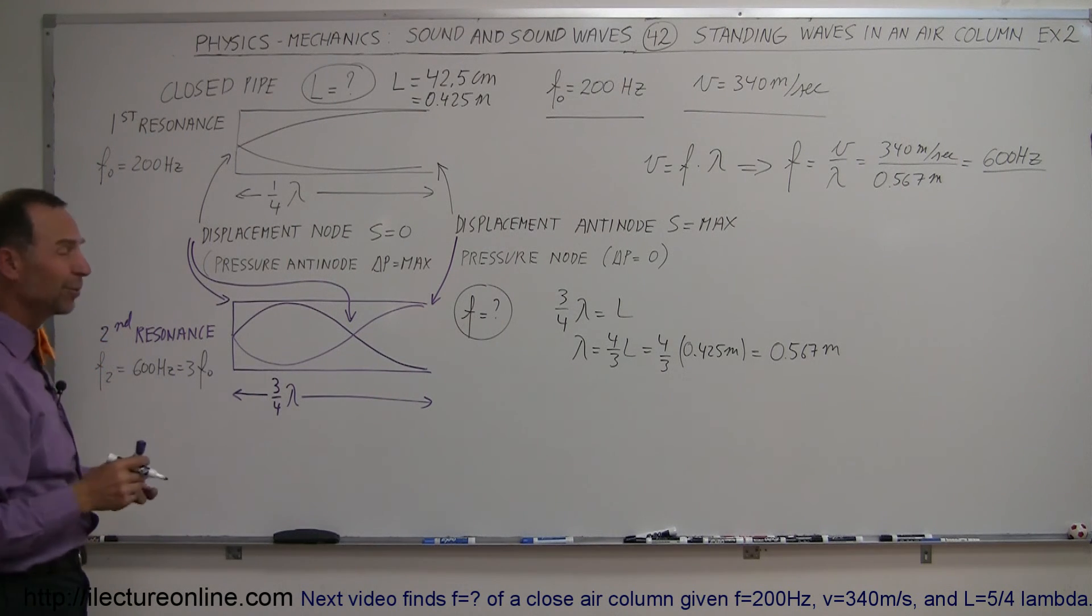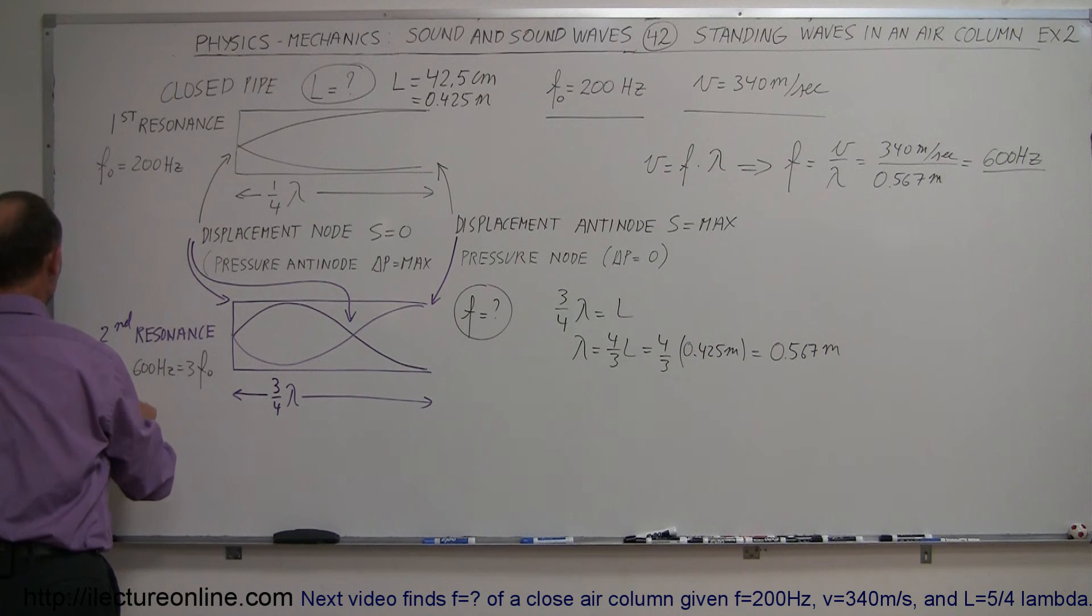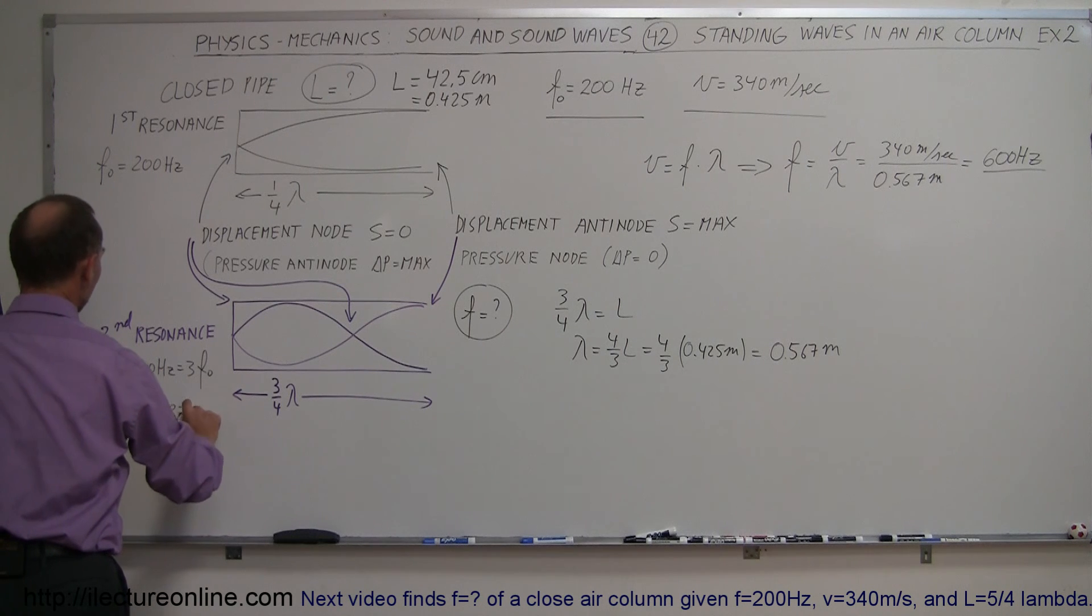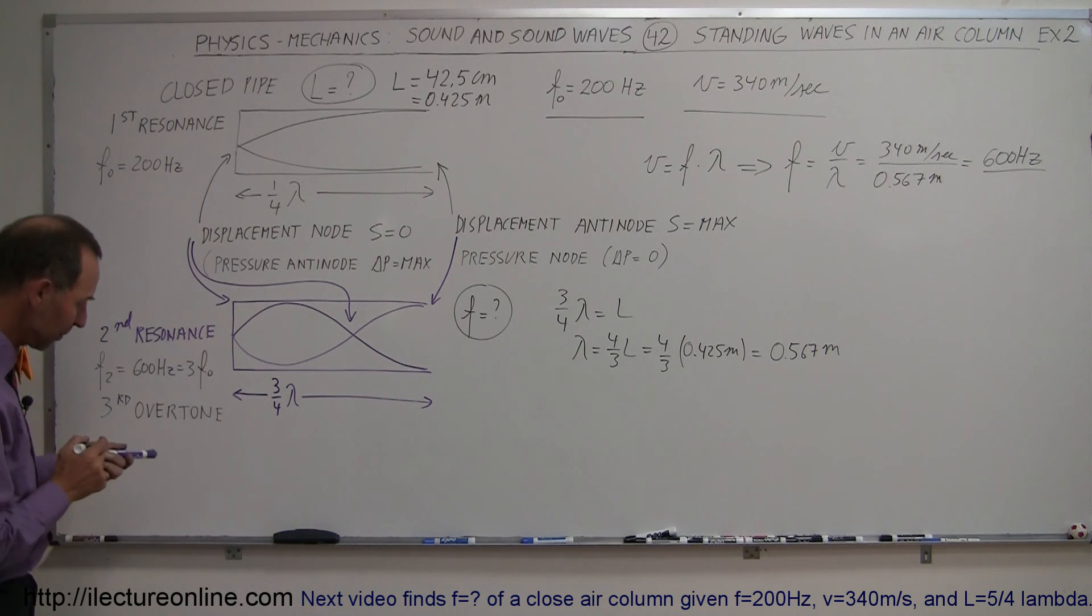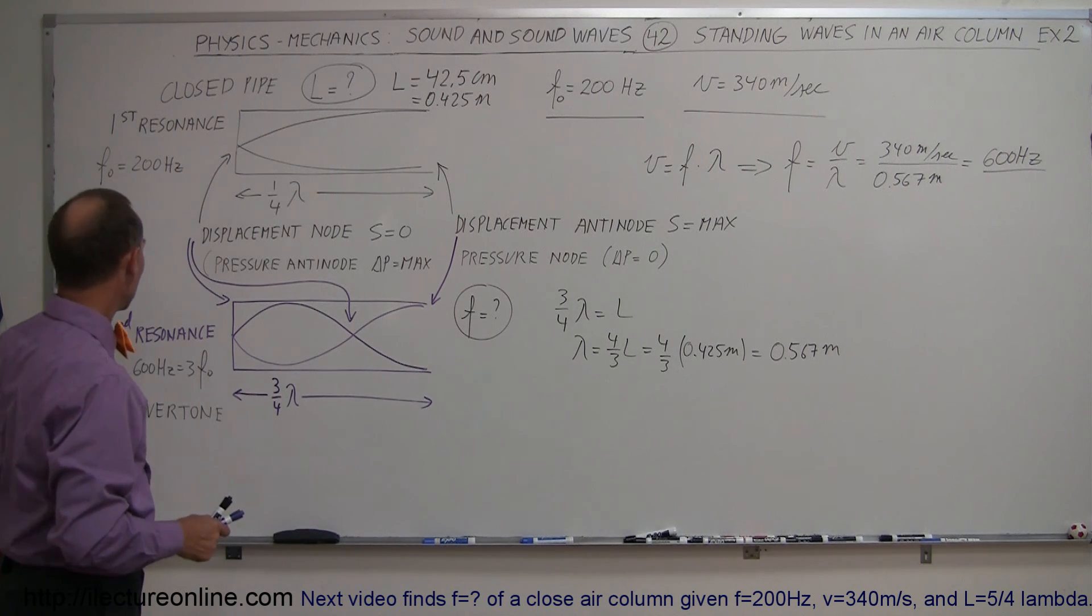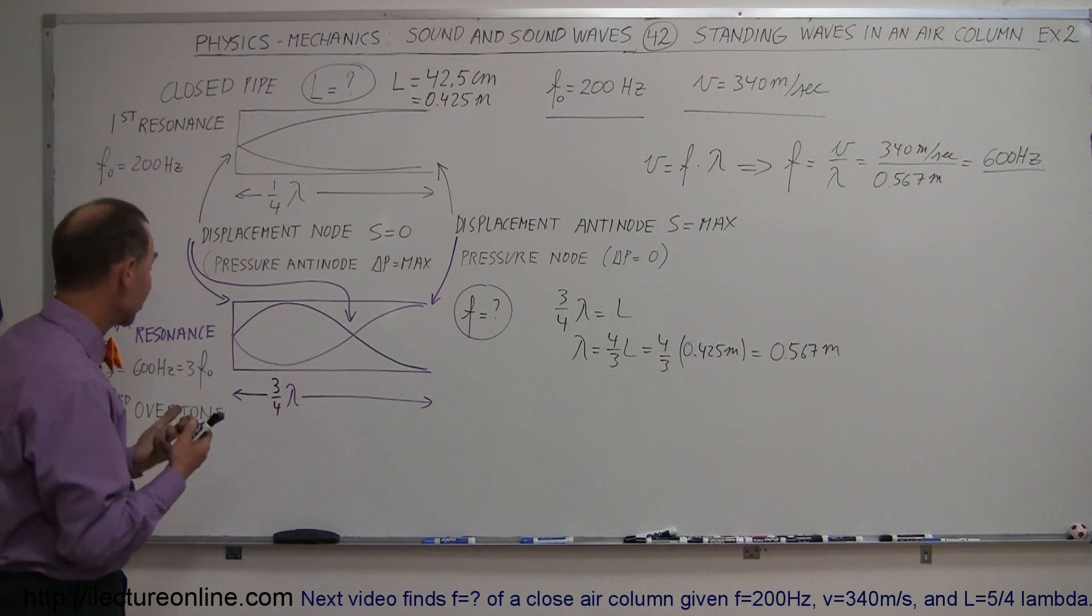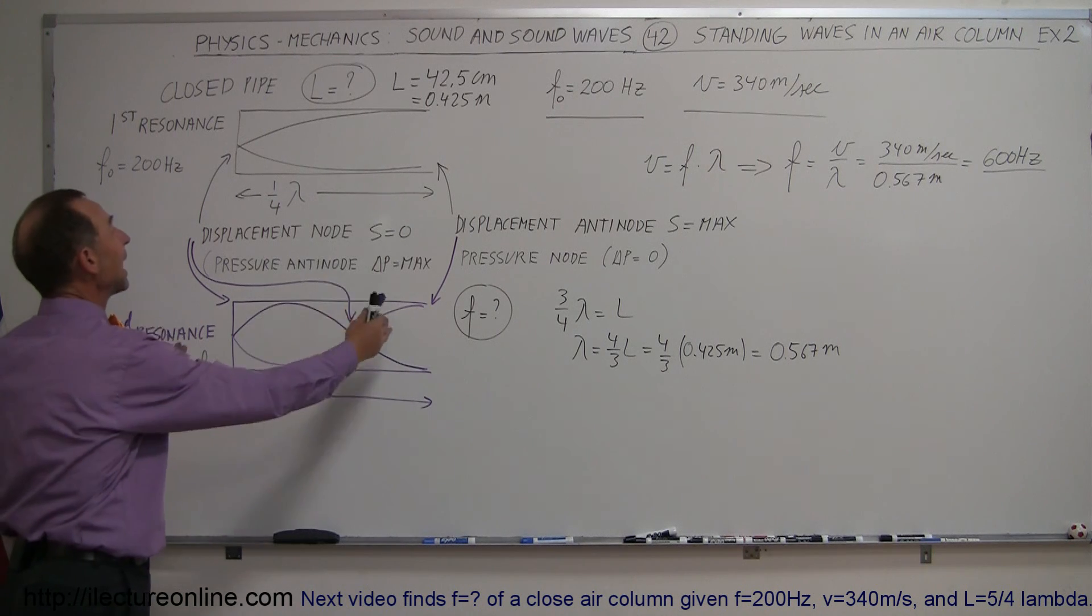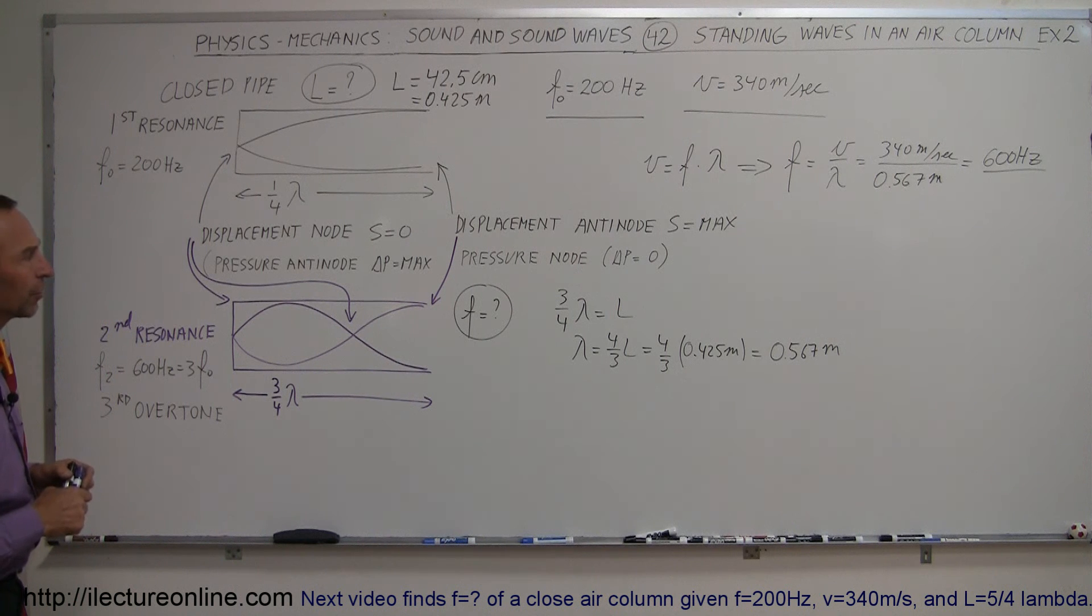Three times the frequency, that is known as the third overtone. So the second resonance on a closed pipe is also known as the third overtone of the sound required to set up this next resonance frequency, where we have a standing wave and a loud sound coming out. That's kind of interesting. So base frequency, or the first resonance, and then we have the second resonance, which is then called the third overtone because you require a sound three times the frequency to set up the next standing wave situation in a closed pipe.